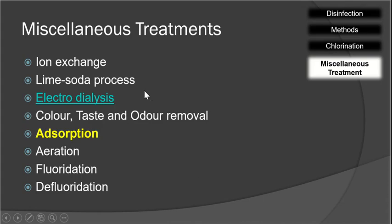So far, we have discussed what is the ion exchange process and lime soda process of water softening, desalination technique, electrodialysis, color taste and odor removal, activated carboning in EUC treatment with copper sulphate, aeration, different types of aerators, what is adsorption, fluoridation and defluoridation.